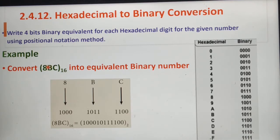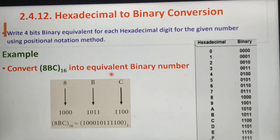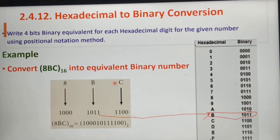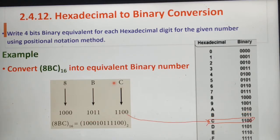Next, we can see an example. Our given hexadecimal number is 8BC to the base 16. First, we have to write the given hexadecimal number as shown, then write its binary equivalent from the table for each digit. Our first digit is 8; its binary equivalent is 1000, as written here. Next, hexadecimal digit B; its binary equivalent is 1011. Next, digit C; its binary equivalent is also written here.